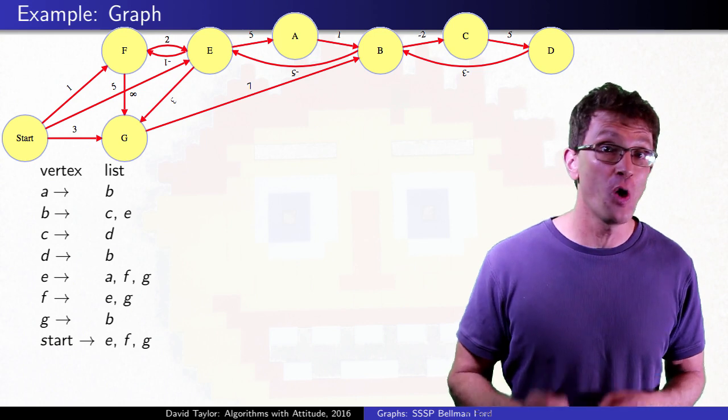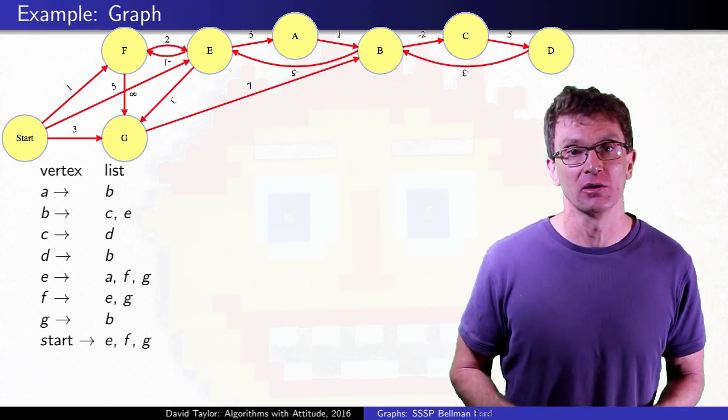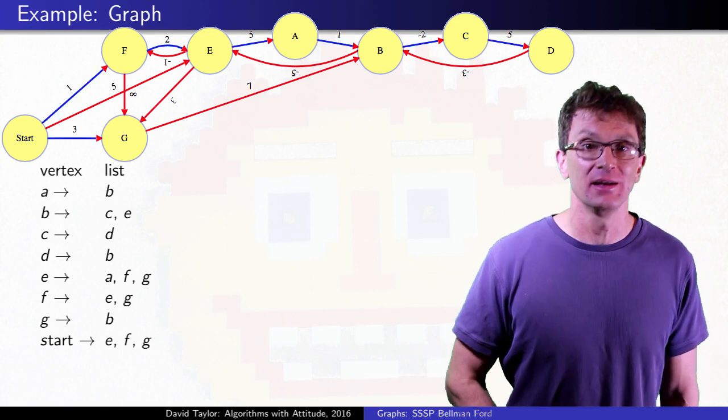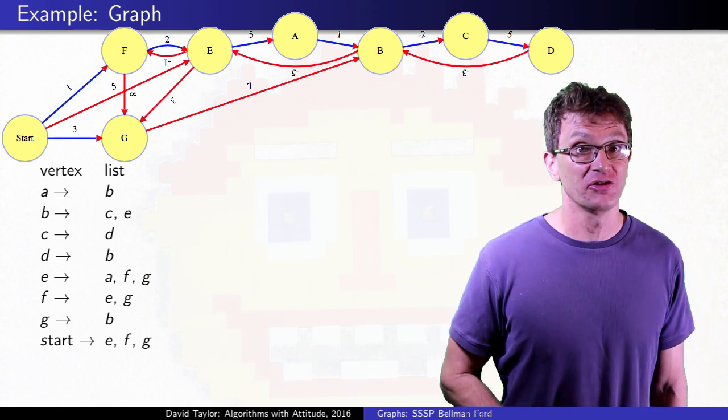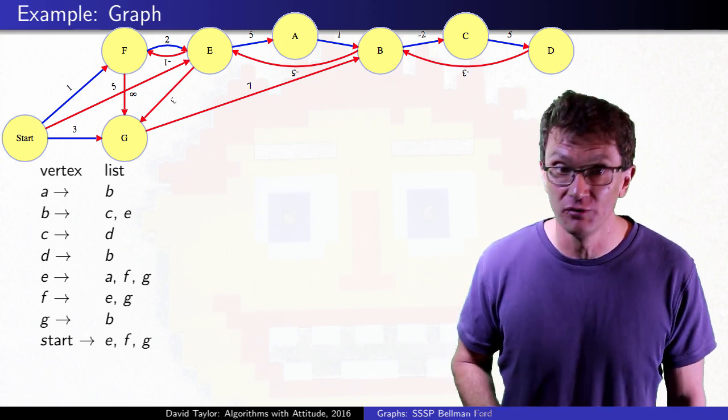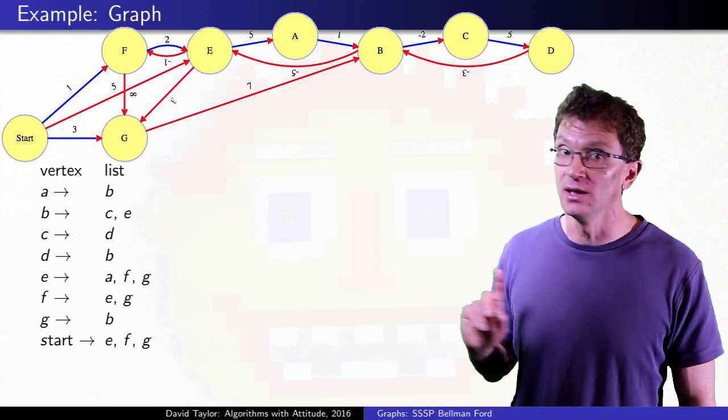This example shows how edge ordering can change the algorithm's run time. For visibility, the shortest path tree is highlighted in blue. I assume the graph's adjacency list is in alphabetical order, with our start node conveniently named start, and we initialize.